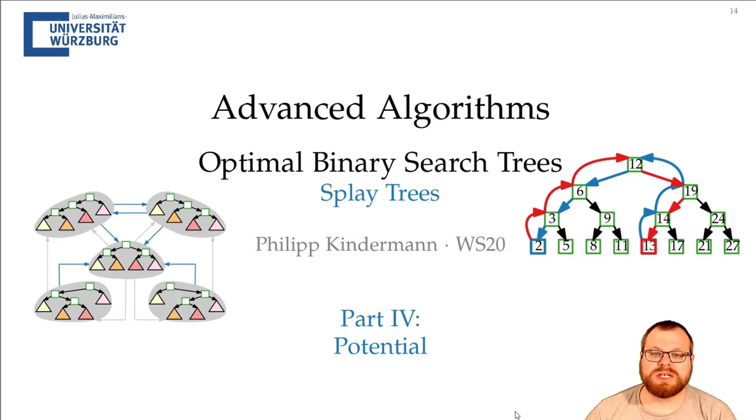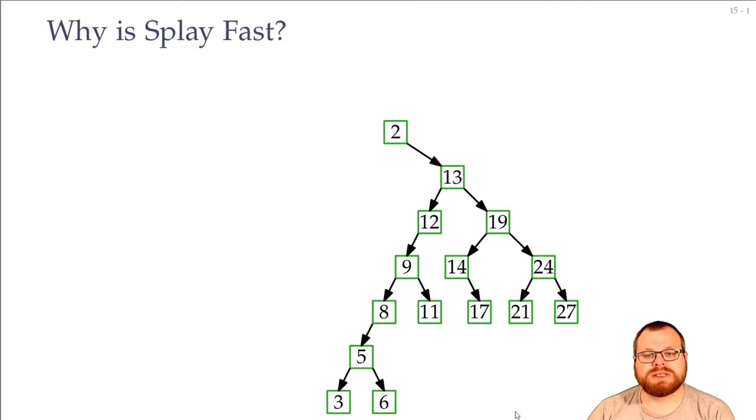In this part we will have a look at the potential method that we will use to prove amortized running times for the splay function. So let's first try to get some intuition why the splay function is fast.